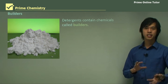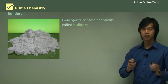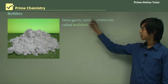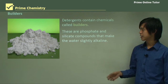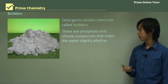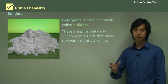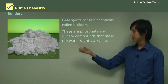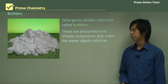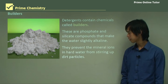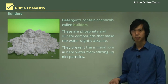The first thing we need to understand is what a builder is. Synthetic detergents contain chemicals called builders — these are phosphate and silicate compounds that make the water slightly alkaline. A builder is just a phosphate or silicate compound that makes water slightly alkaline. They prevent the mineral ions in hard water from stirring up dirt particles.